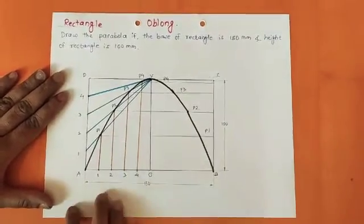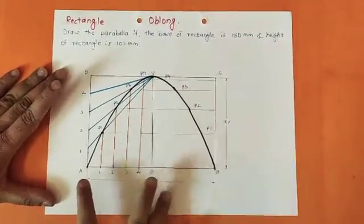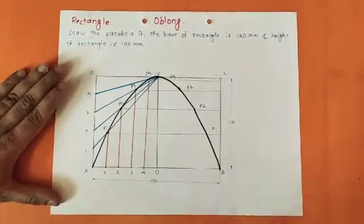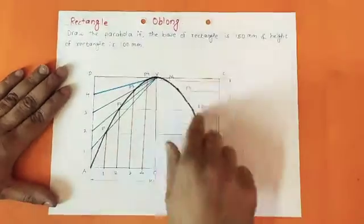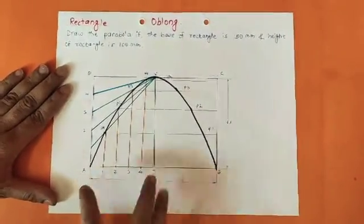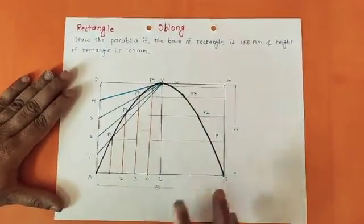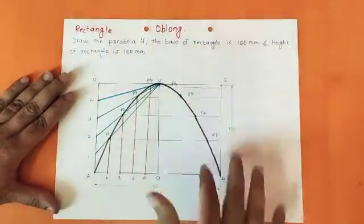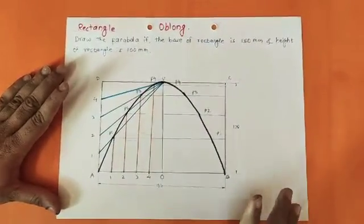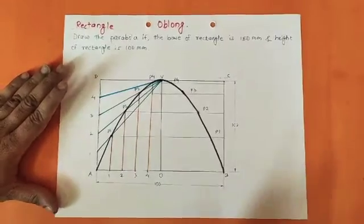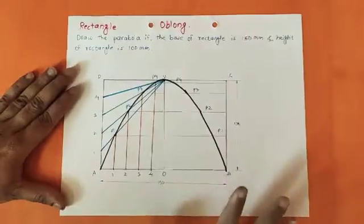A common doubt is whether to divide AO and AD into 4 or 5 equal parts. Depending on your skill, if you can draw a smooth curve, you may divide into 4 equal parts. The maximum recommended is 6 parts, as more divisions consume too much time. Choose 4 to 5 parts based on how smooth a curve you can draw through those points.